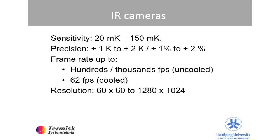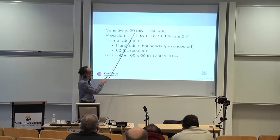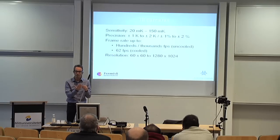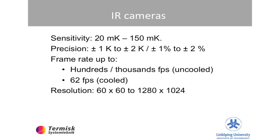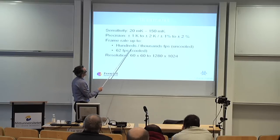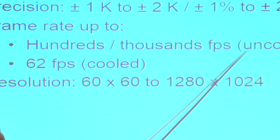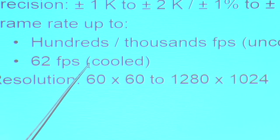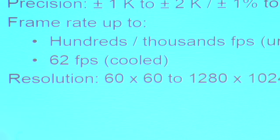For temperature measurement, sensitivity in different cameras varies between 20 and 150 mK — meaning you can see the temperature difference between two pixels as small as 20 mK. But the absolute precision is around one or two Kelvin since the entire image can drift without a reference. These cameras can be very fast — hundreds of thousands of frames per second for cooled cameras, or up to 60 frames per second for uncooled ones. Resolutions vary depending on your budget.